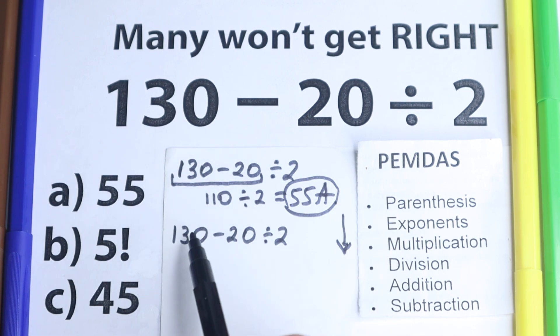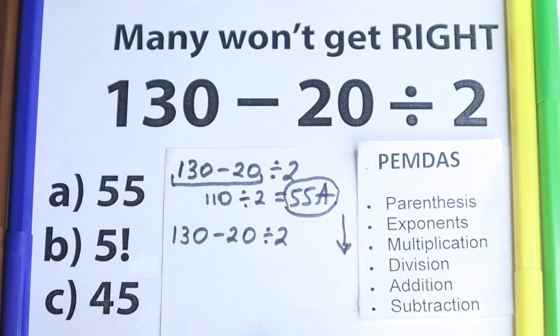Next step, exponents. Are there any exponents right here? No, I don't see any. We don't have any exponents, squares, cubes, which is really great. What about the next step? We have multiplication and division part.